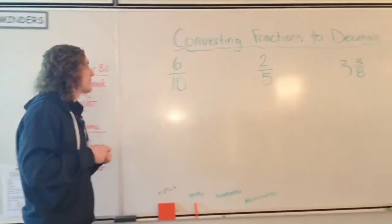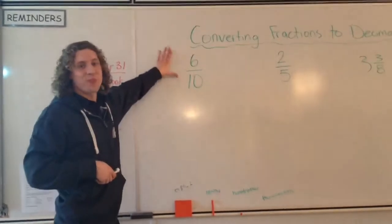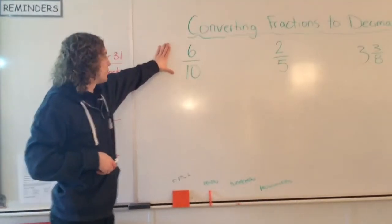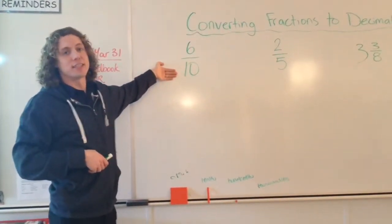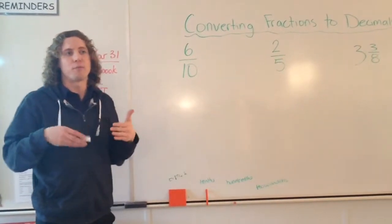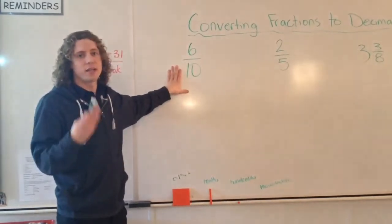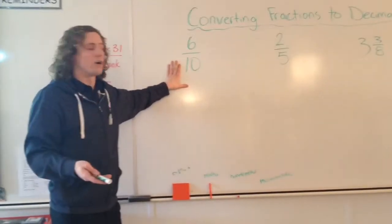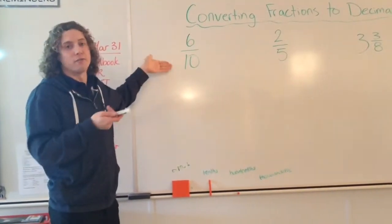To make 6/10 into a decimal, it's actually giving us an easy thing to use. In order to make a fraction easier to represent as a decimal, you want to make it either out of 10, 100, or 1000. But right now we actually have a 10 at the bottom, so it's actually really simple.